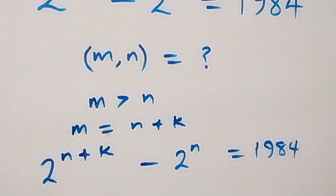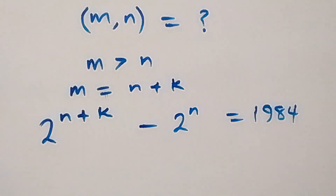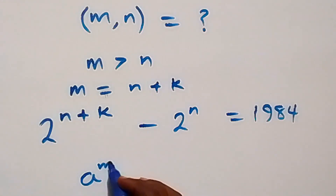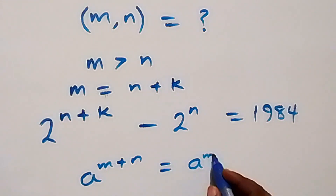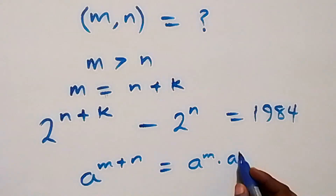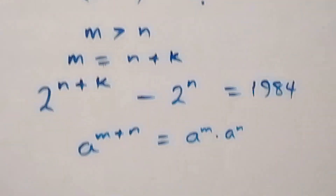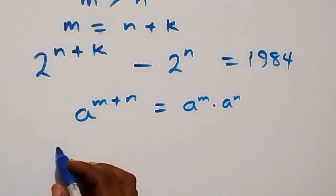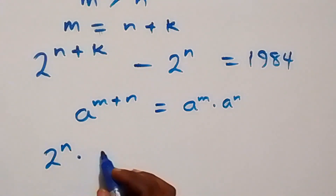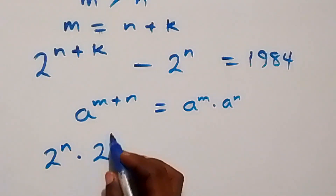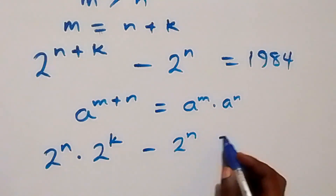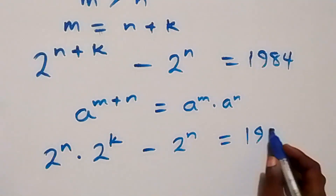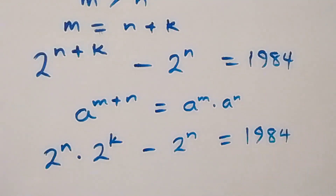From what is given, we apply the law of indices: a raised to power (n + k) is the same as a raised to power n times a raised to power k. So here we have 2 raised to power n multiplied by 2 raised to power k, minus 2 raised to power n, equals one thousand nine hundred and eighty-four.